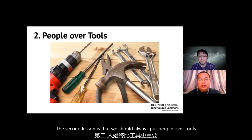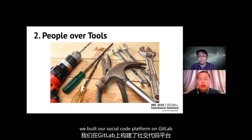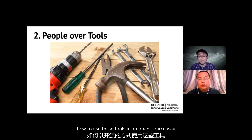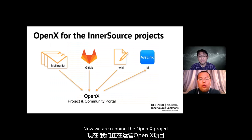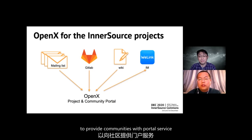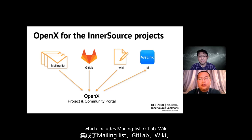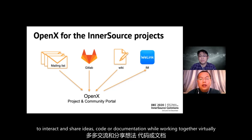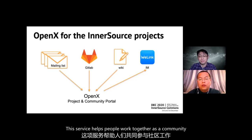The second lesson is that we should always put people over tools. In InnerSource 1.0, we built our social code platform on GitLab where anyone can create a Git repo. We merely provided training sessions on Git, but didn't address how to use these tools the open-source way. Now we are running the OpenX project to provide a communication portal service, which includes mailing lists, GitLab, Wiki, and Vlink. We are also encouraging people to interact and share ideas, code, and documentation while working together virtually, helping people work together as a community.